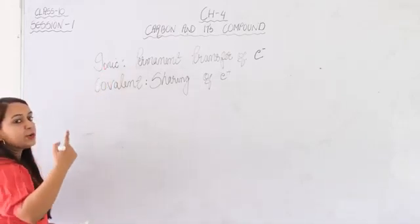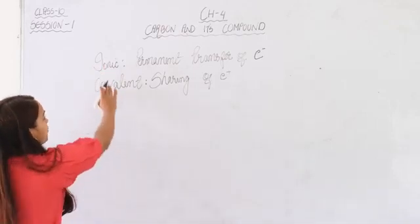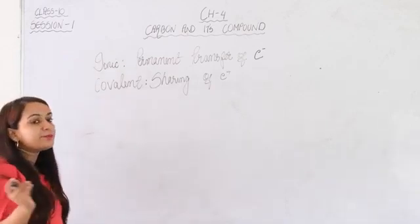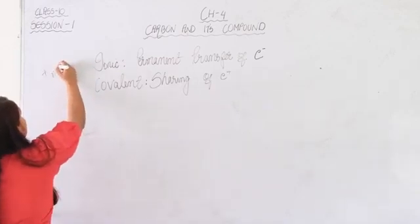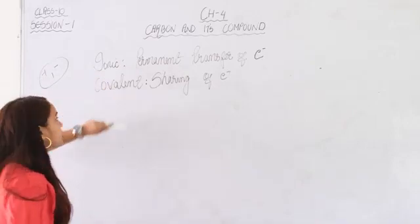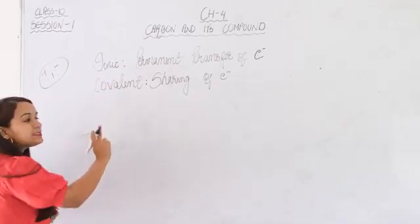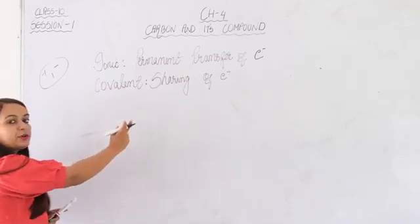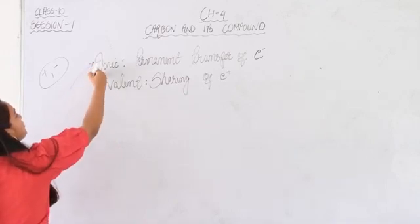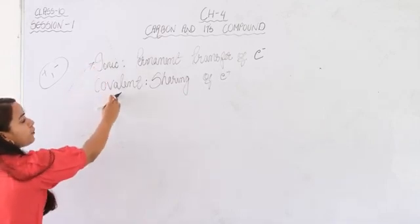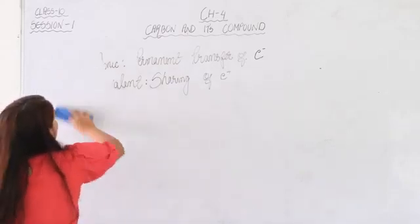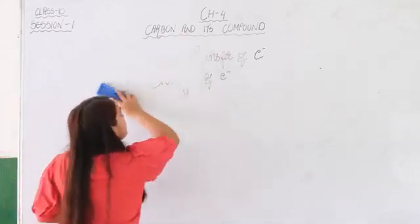Upon permanent transfer of electrons, ionic compounds will have positive and negative charges. Covalent bond, since it is formed by the sharing of electrons, does not have any charge. Logically, ionic bonds are much stronger while covalent bonds are comparatively weaker.